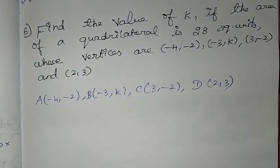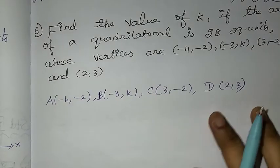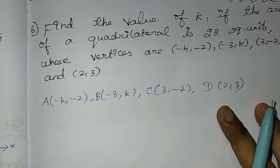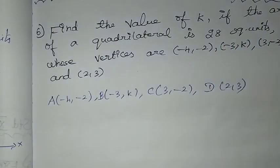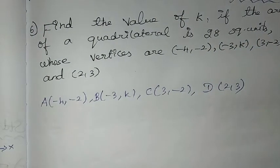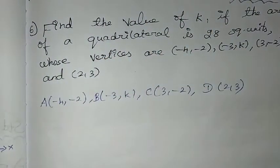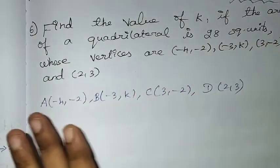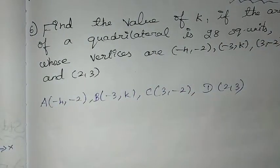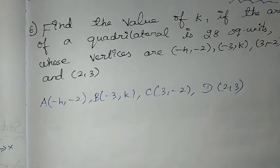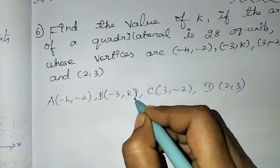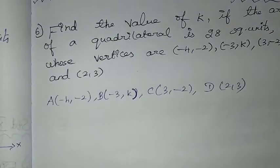So, 4 vertices are given, including k. The area of the quadrilateral is 28 square units and we need to find the value of k. This is the plot of the quadrilateral, arranged anti-clockwise.